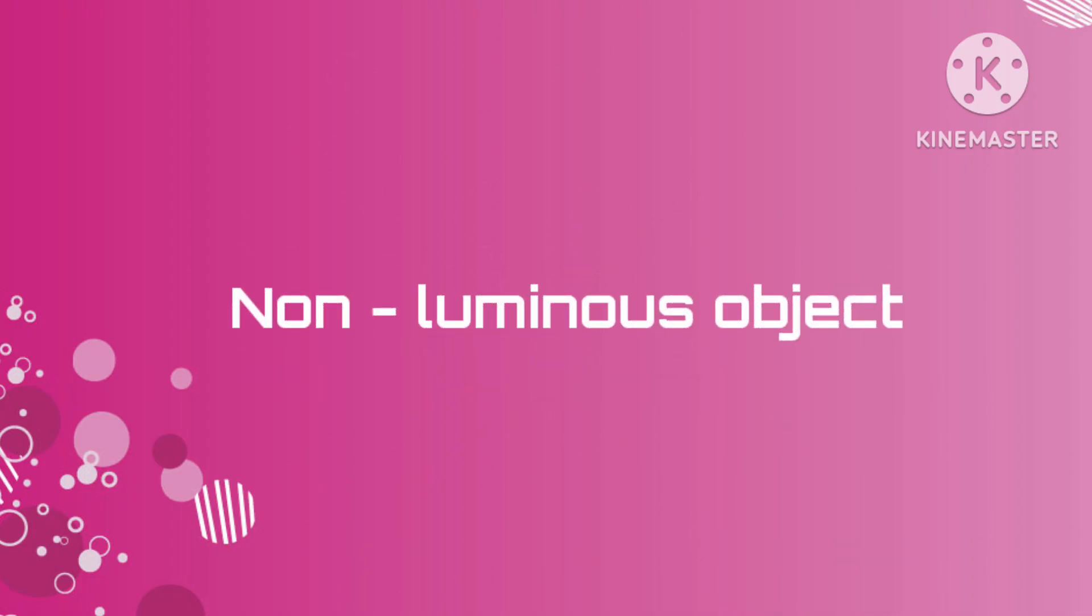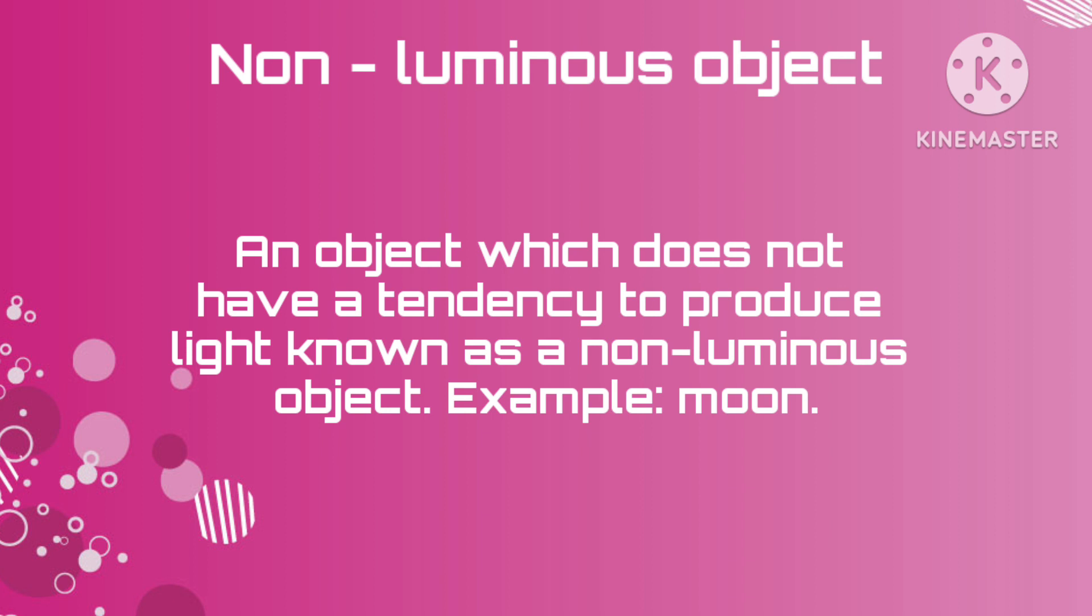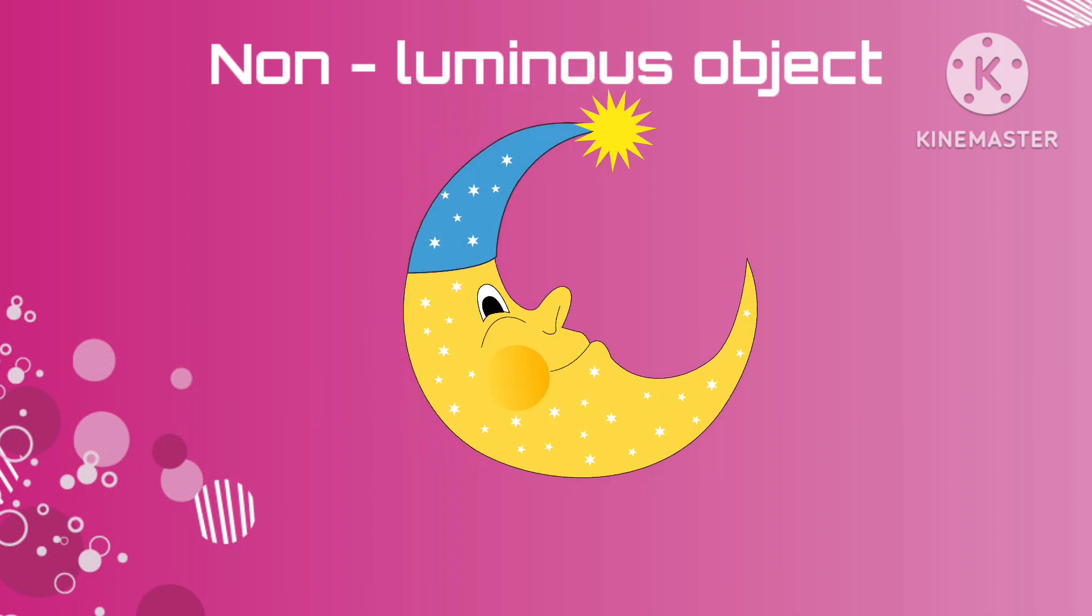Second is non-luminous objects. An object which does not have a tendency to produce light is known as a non-luminous object, e.g. moon.